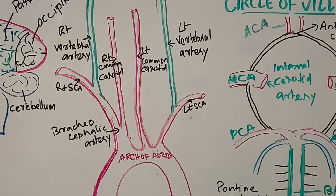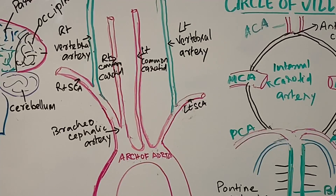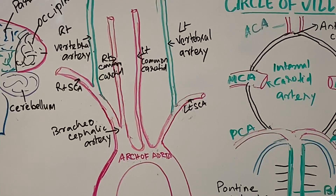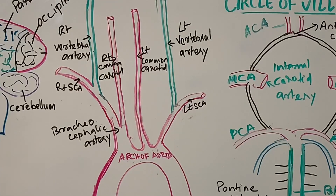The right and left common carotid arteries supply blood to the cerebrum, and the two vertebral arteries supply blood to the cerebellum. The carotid artery divides into three major arteries when it reaches the cerebrum: the anterior cerebral artery, the middle cerebral artery, and the posterior cerebral artery.